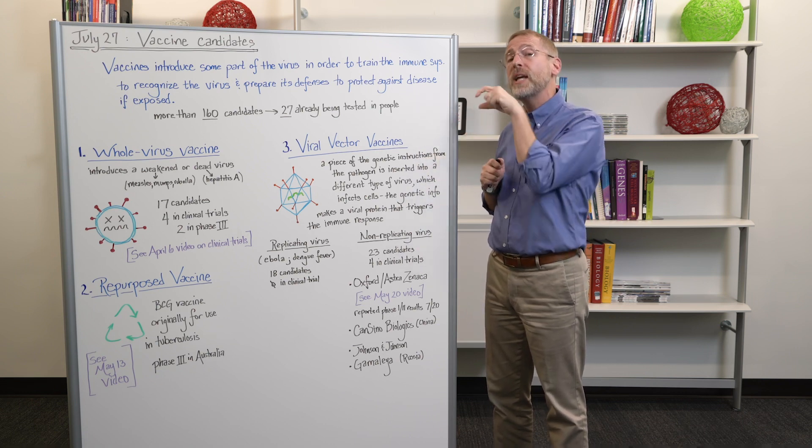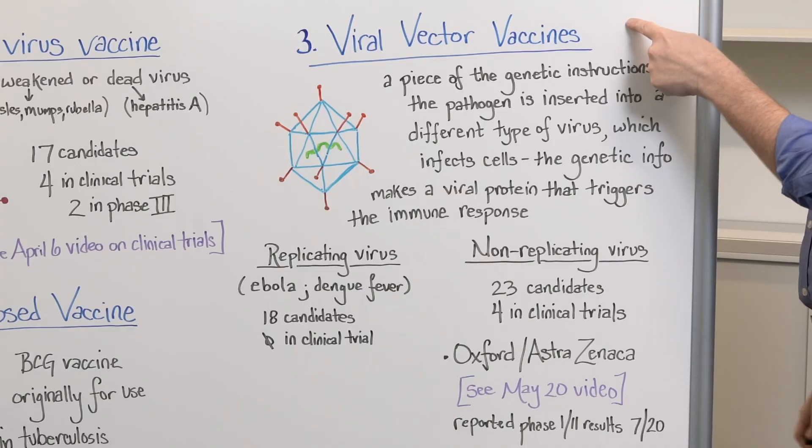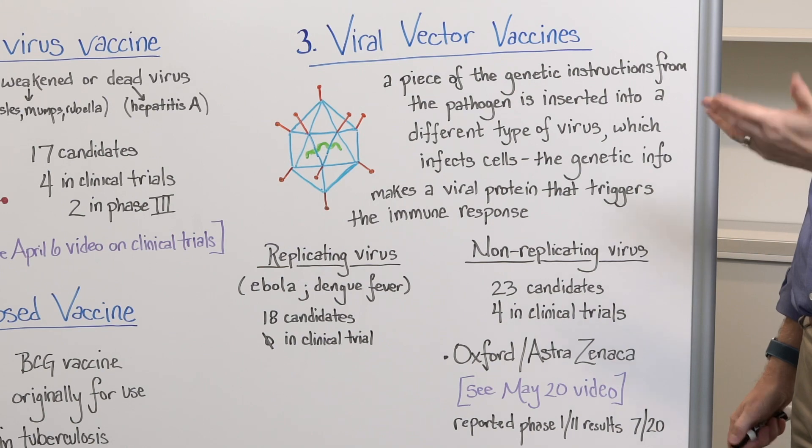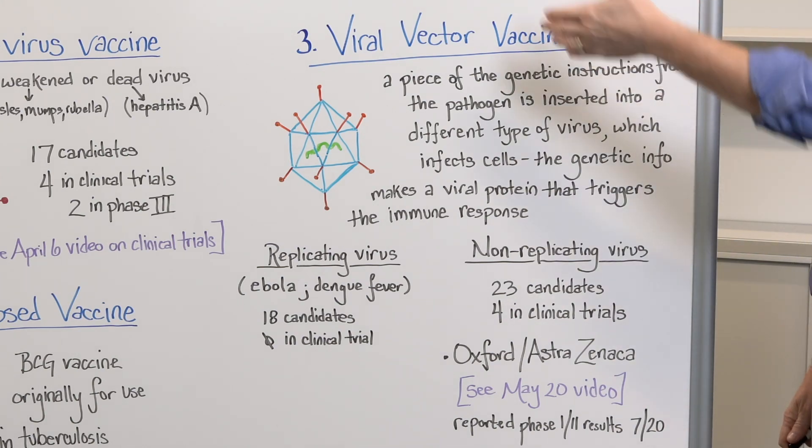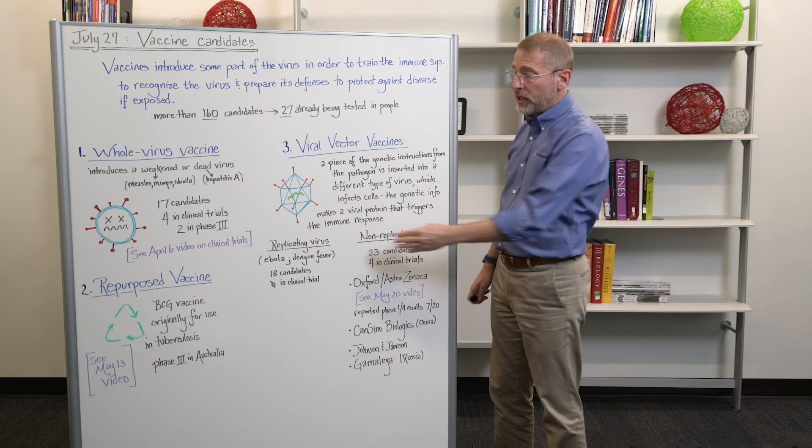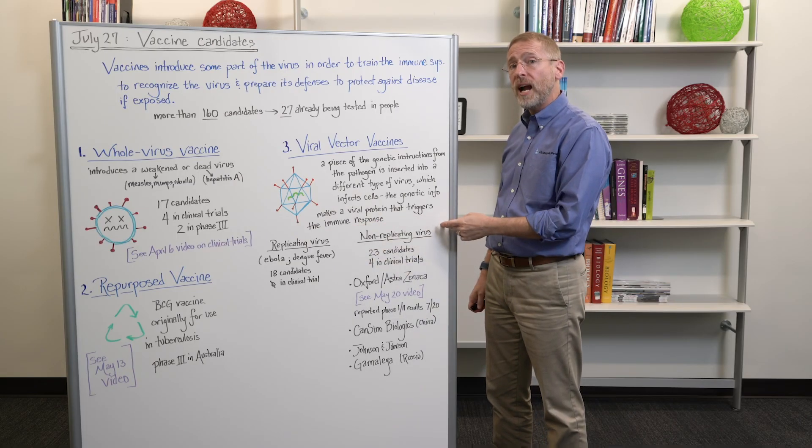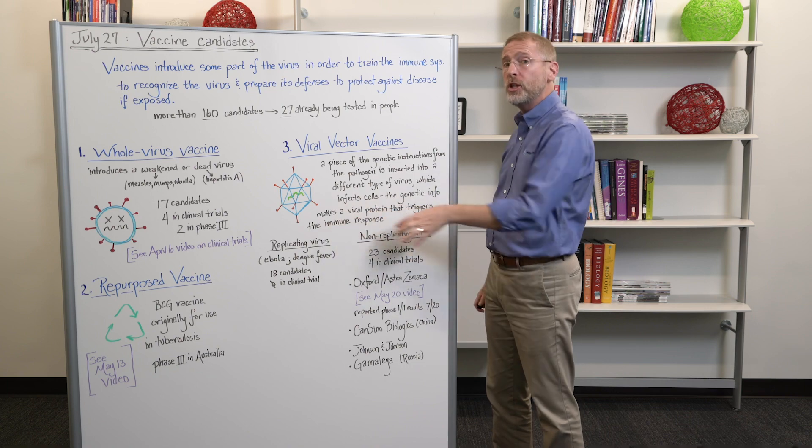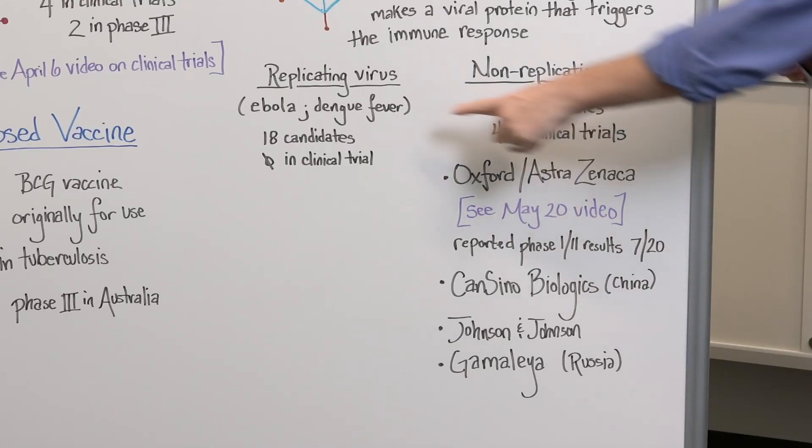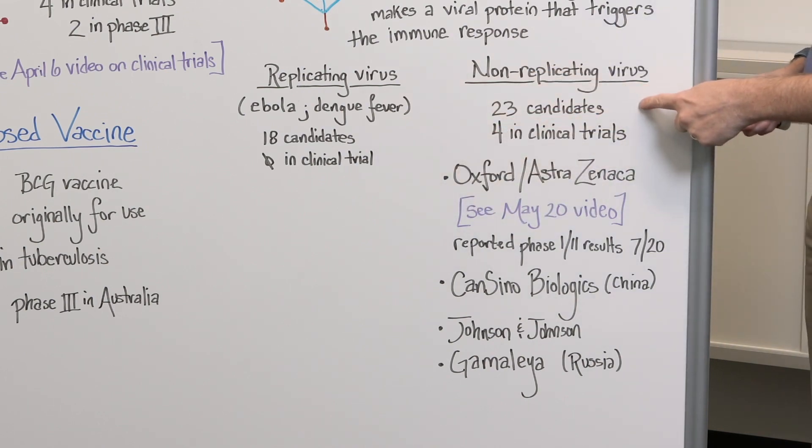So the goal of category three and four is to find the best way to get a piece of the SARS-CoV-2 virus into our cells. Category three uses a completely different virus, often an adenovirus, which is a common cold virus, as the way to infect the cell and get that bit of DNA in. There's a couple different categories of the type of virus that you can use. We're not going to differentiate between those for this discussion. But I will note that there are several 18 candidates here and 23 candidates in these categories. And there are four that are currently in clinical trials.